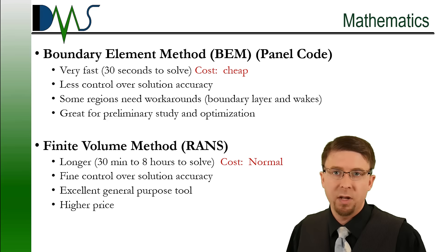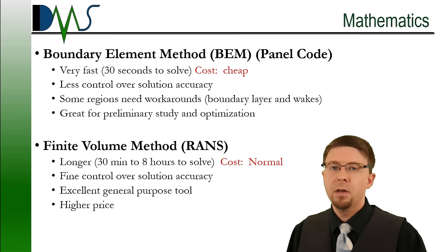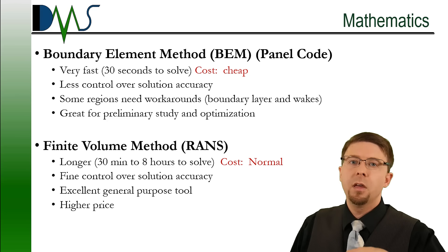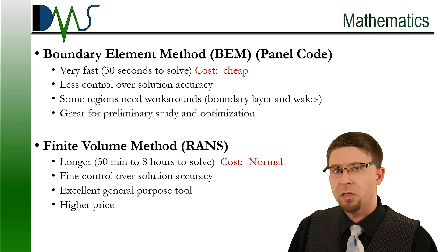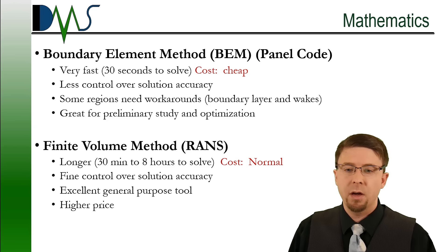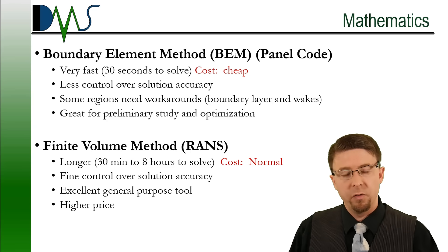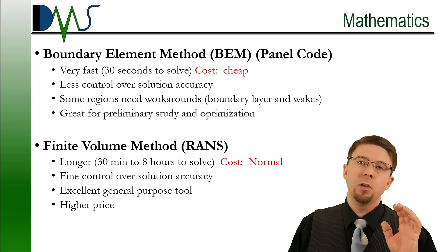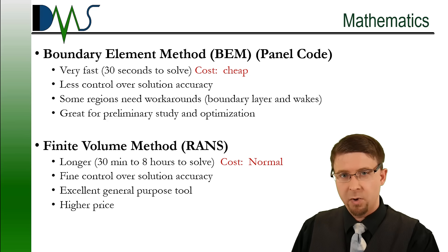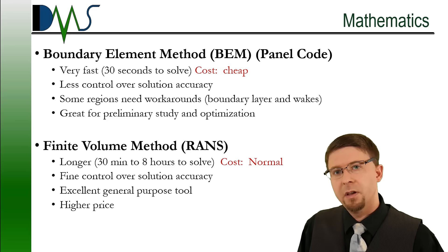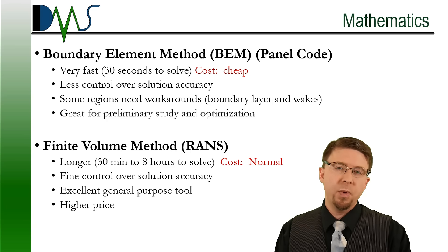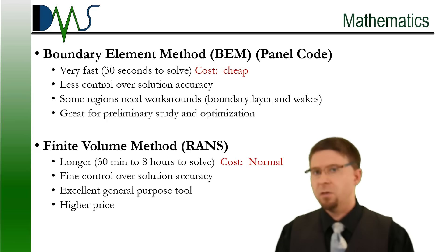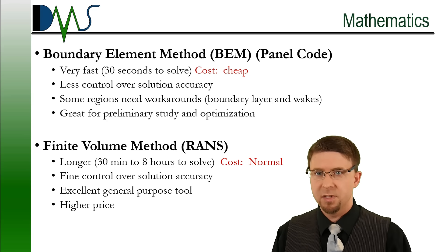If you're looking for something more robust, the next option up is the finite volume method, also called RANS codes. These require quite a bit longer to calculate — more powerful computers, taking 30 minutes to 8 hours to run a simulation — but they give you a lot more control over solution accuracy. Rather than just meshing the edges of your domain, you're now meshing the entire volume as well. This makes the finite volume method an excellent general purpose tool, and it's the normal baseline that most people mean when they say CFD.